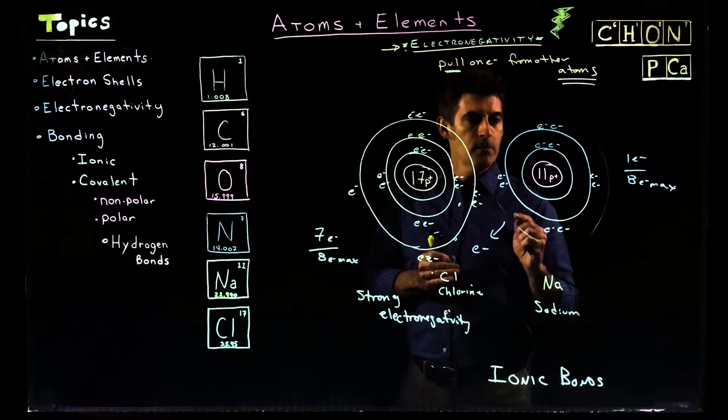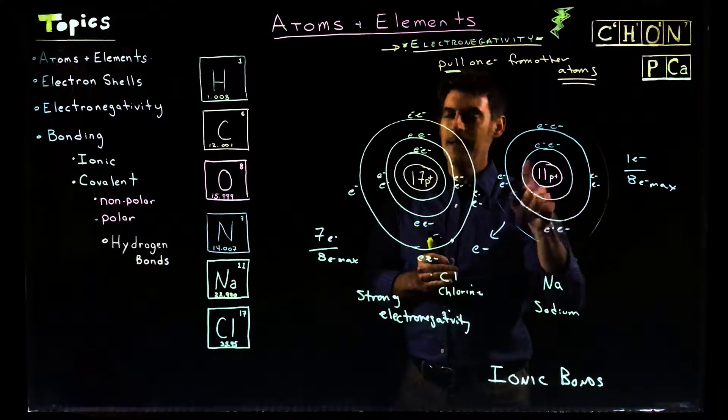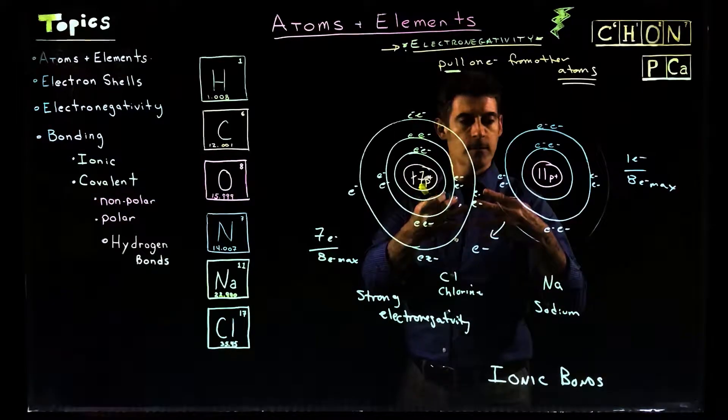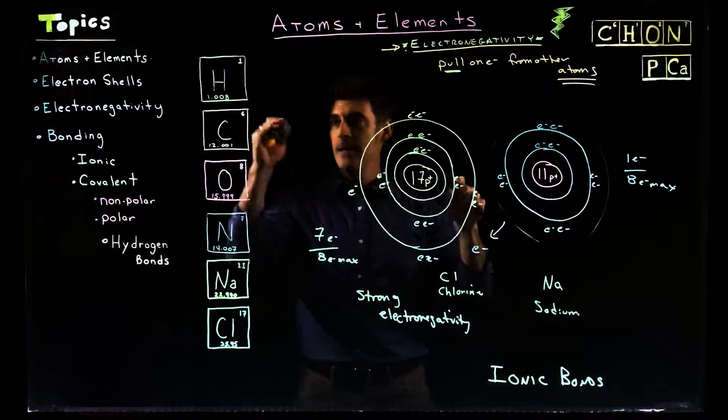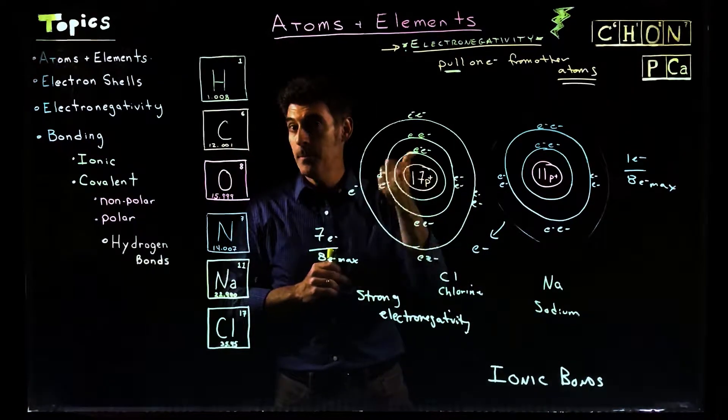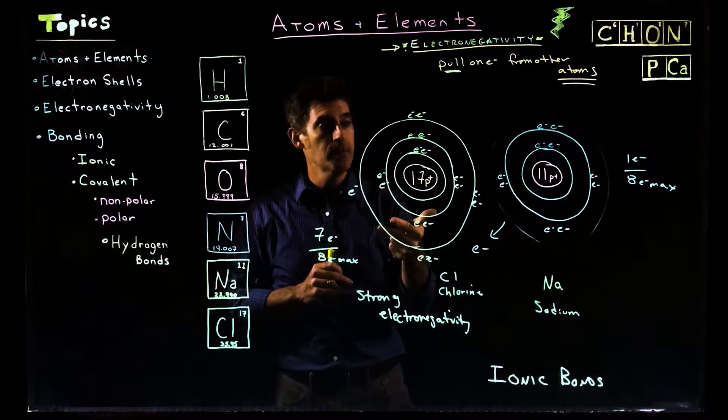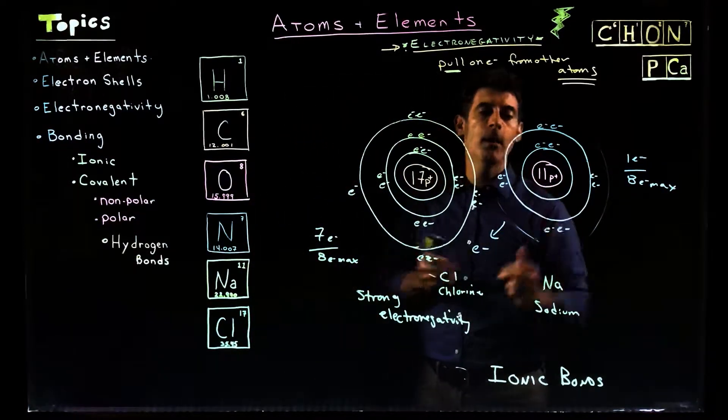But there's an issue, right? We have 11 protons, 10 electrons. So now there's an imbalance. We don't have an equal number. Remember in the beginning, we talked about the elements. We said atomic number is the number of protons. It's usually the number of neutrons and electrons. In this case now, the electrons and protons aren't going to be the same.